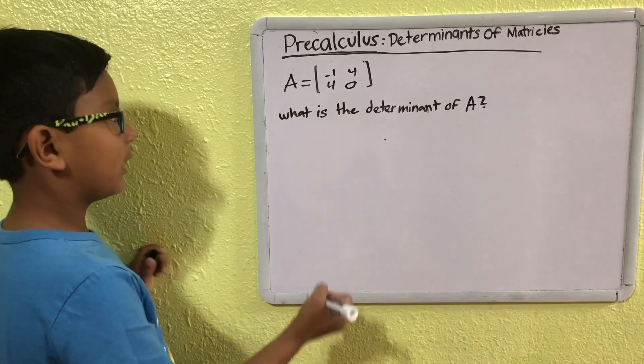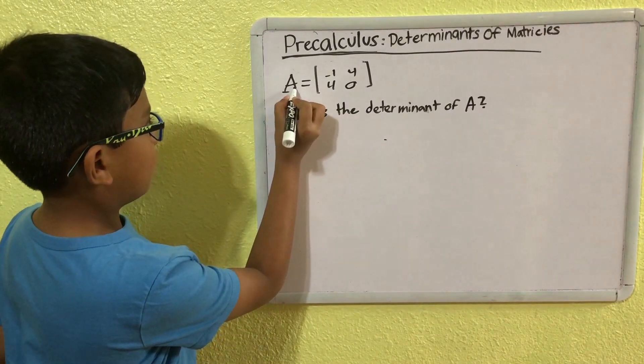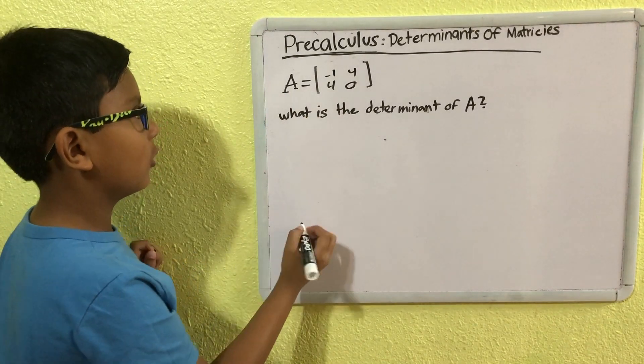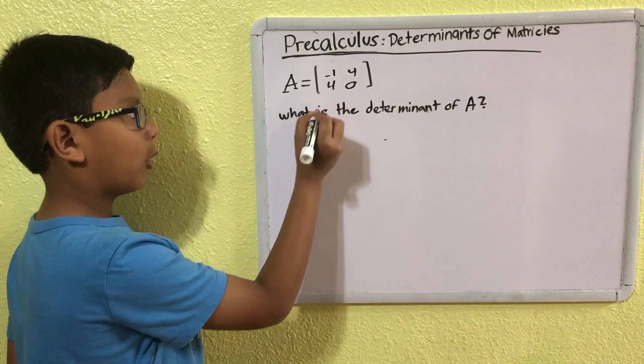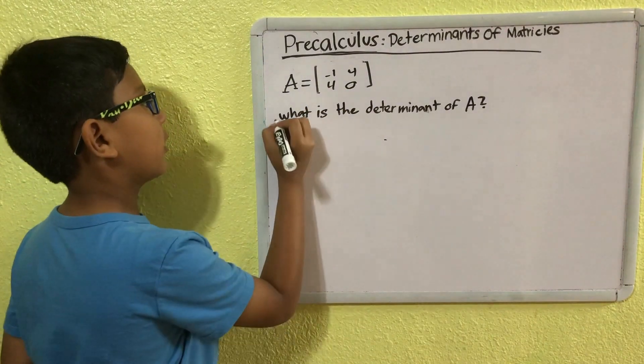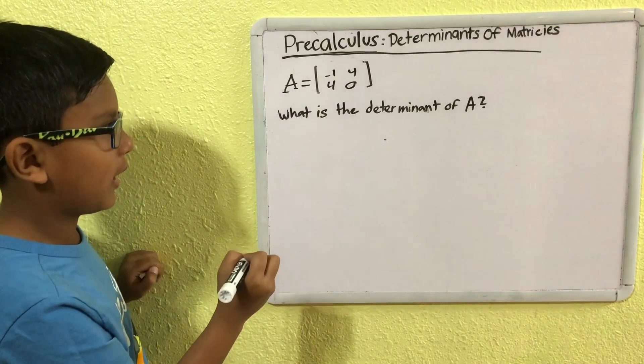This is the second example. So, we have the matrix A set to minus 1, 4, 4, 0. Now, the question is, what is the determinant of A?